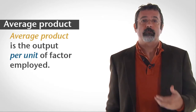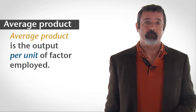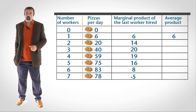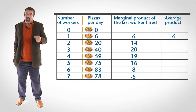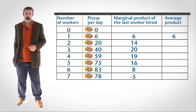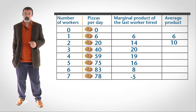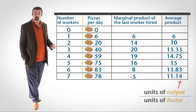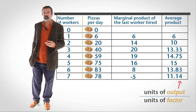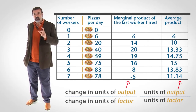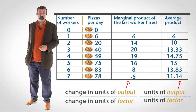Average product is the average output generated by all the units of short-run factor. Average product is the output per unit of factor employed. For example, when the firm has one worker it produces six pizzas, so its output per worker is six pizzas per day. When the firm has two workers it produces 20 pizzas, so its output per worker is 10 pizzas per day. In general, the average product is the quantity of output divided by the quantity of factor employed. By dividing the quantity of output by the number of workers, we can calculate the average product for each of the various quantities of workers.